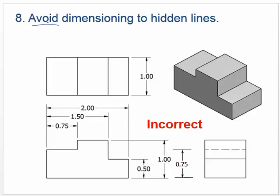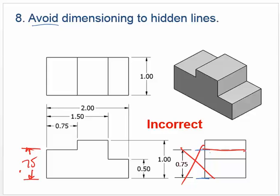Avoid dimensioning to hidden lines. Sometimes you have to, but a lot of times you can find a way to do it without dimensioning to a hidden line. They've got a hidden line here and dimensioned to it to show the height — we don't want to do that. Over here would be a much better way, avoiding the hidden line. And if you're worried about putting it outside, that's a guideline, not a rule — we'd rather have you dimension outside than dimension to a hidden line.